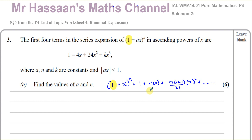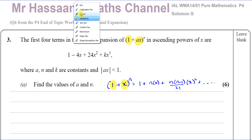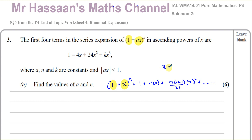For this particular question, we don't have to worry about modifying it — it's exactly as it should be for us to use the formula. One thing to note is that the x in our formula refers to whatever term is there, including the sign. So our x is going to be ax.